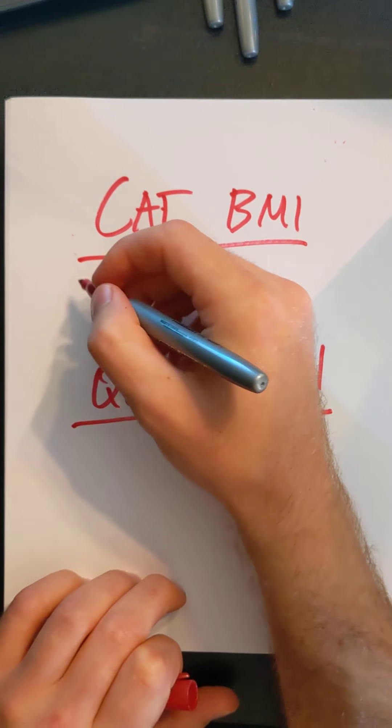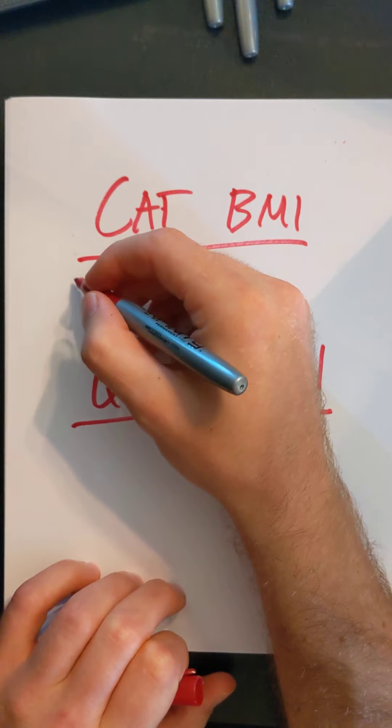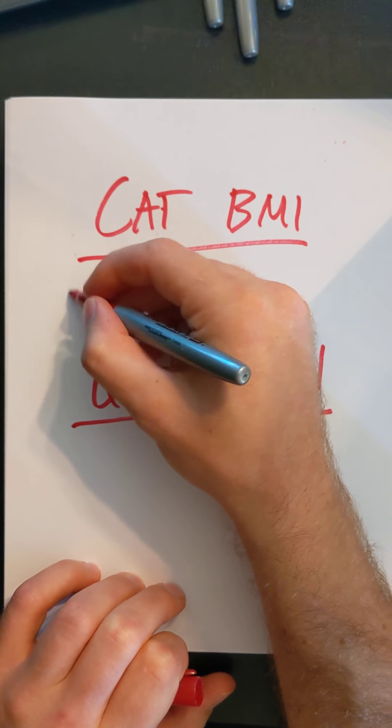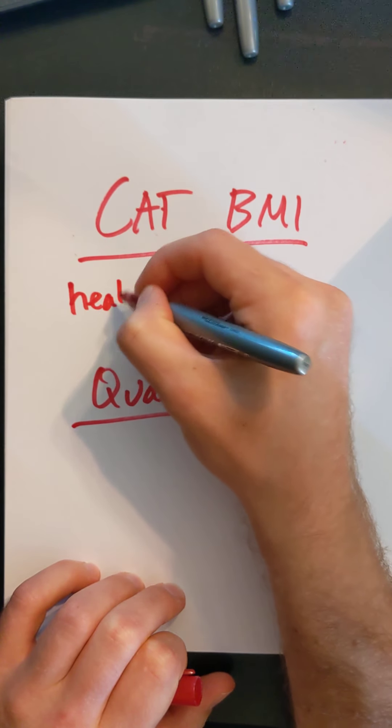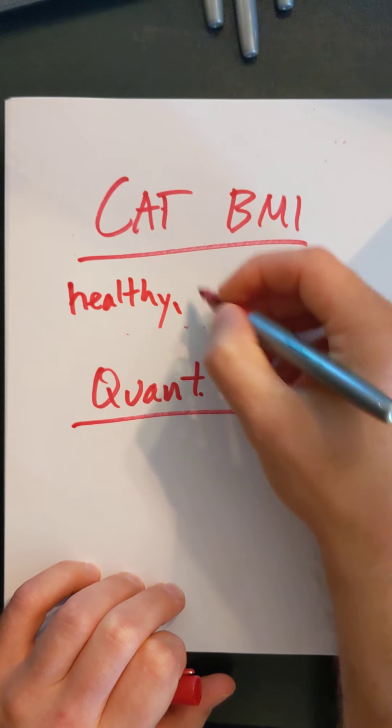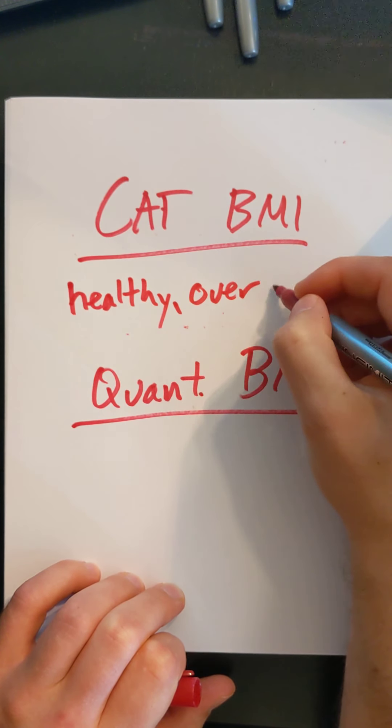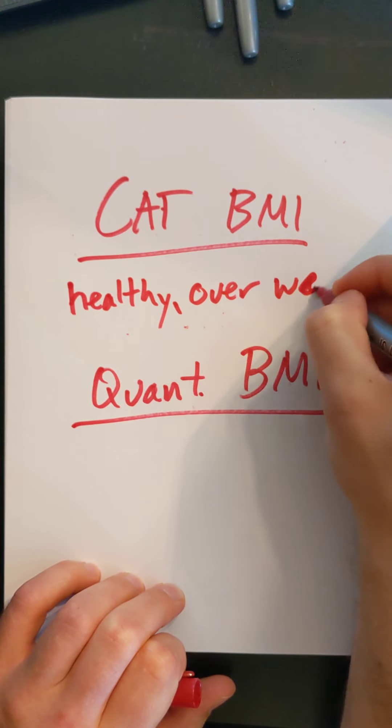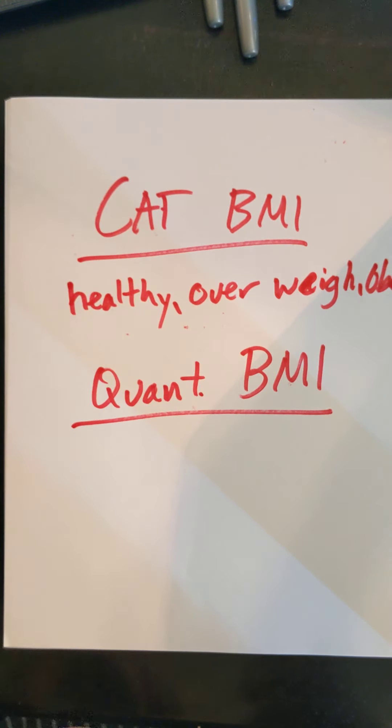So if you're looking at categories, you could split into healthy BMI, overweight, obese. These would be categories within BMI.